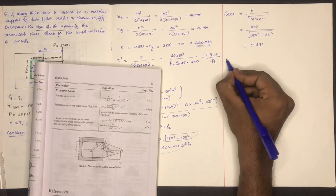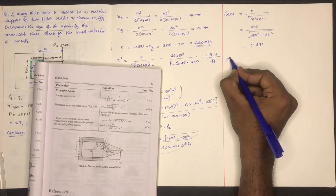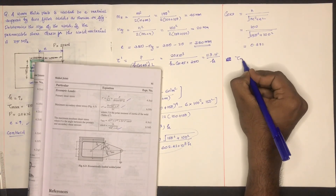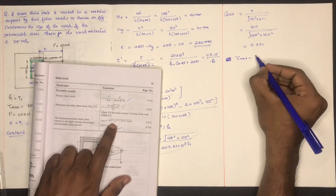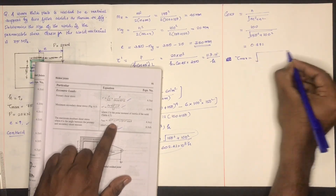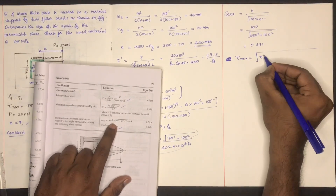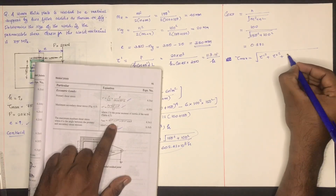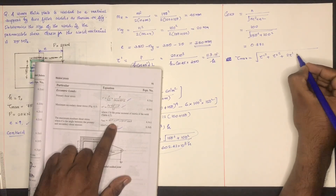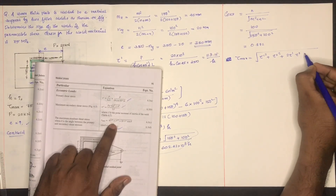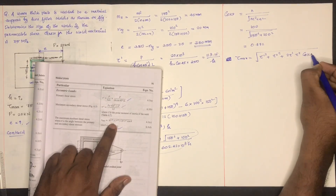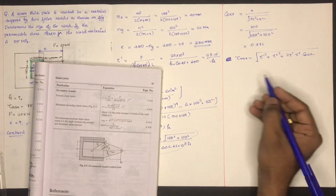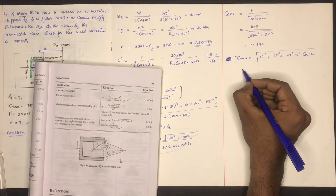τ_max is equal to the square root of (τ'² + τ''² + 2·τ'·τ''·cos θ). Adding these to h, we can solve for h.